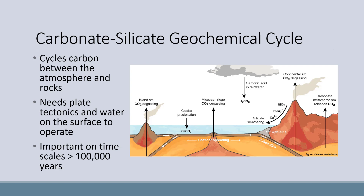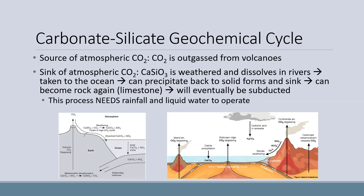The carbonate silicate cycle is important on timescales greater than 100,000 years, so it isn't going to balance CO2 during our lifetimes. The source of atmospheric CO2 is volcanic activity, and the sink for atmospheric CO2 consists of a series of steps. First, calcium silicate minerals are weathered from rocks and dissolve in rivers. Atmospheric CO2 is important for the weathering of silicate minerals, which makes calcium ions, bicarbonate, and silicon dioxide (also known as silicate), which is taken to the ocean where it can precipitate, primarily as calcium carbonate, to solid forms and sink.